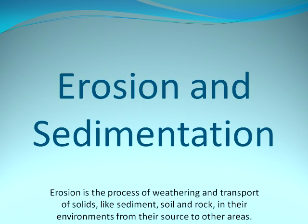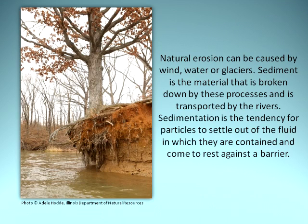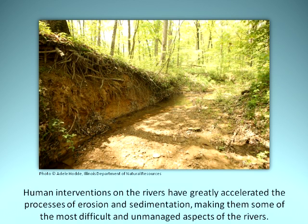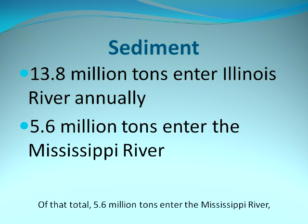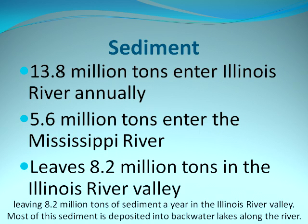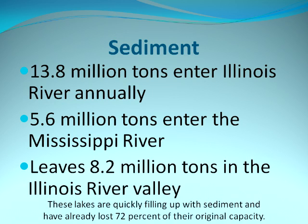Erosion and Sedimentation: Erosion is the process of weathering and transport of solids like sediment, soil, and rock from their source to other areas. Natural erosion can be caused by wind, water, or glaciers. Sediment is the material broken down by these processes and transported by rivers. Sedimentation is the tendency for particles to settle out of the fluid and come to rest against a barrier. Human interventions have greatly accelerated erosion and sedimentation, making them some of the most difficult aspects of managing the rivers. Each year, 13.8 million tons of sediment enter the Illinois River; of that total, 5.6 million tons enter the Mississippi River, leaving 8.2 million tons of sediment a year in the Illinois River Valley. Most of this sediment is deposited into backwater lakes, which have already lost 72% of their original capacity.